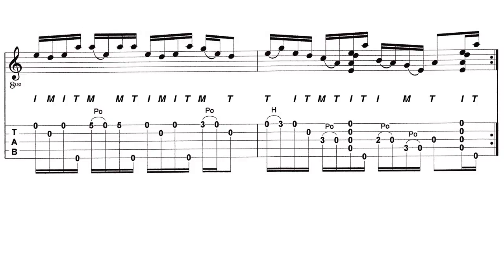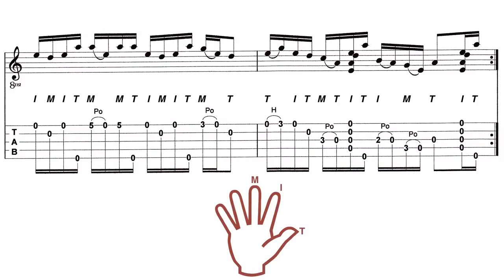This is an example of banjo tablature. You can see there is a treble clef, and the notes are indicated as you would play on any other instrument, with note heads and stems showing notes and rhythms. The bottom system is banjo tablature, where the rhythm is notated and numbers correspond to frets. It also tells you which right-hand finger to use: T for thumb, I for index, and M for middle finger.